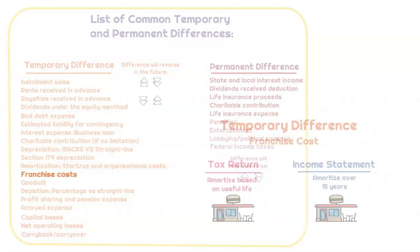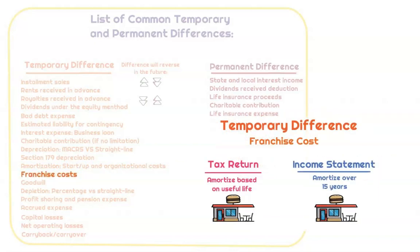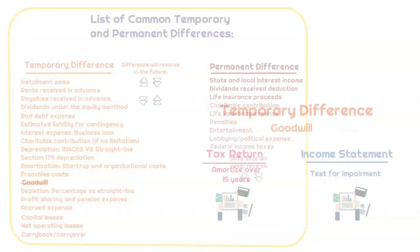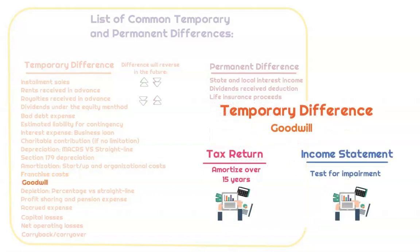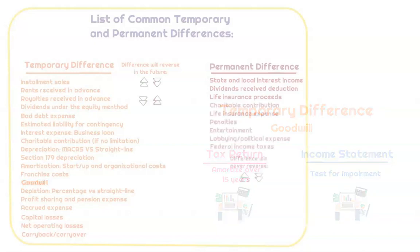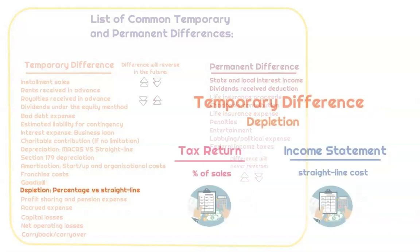Franchise costs will have a difference in amortization — on the tax return we amortize over 15 years. Goodwill is also going to be a little different: on the tax return we amortize over 15 years, while in the books we provide an impairment test. Depletion might also have a temporary discrepancy.